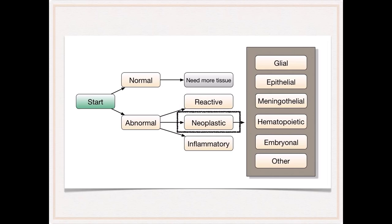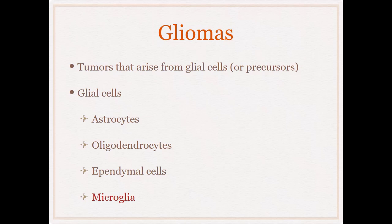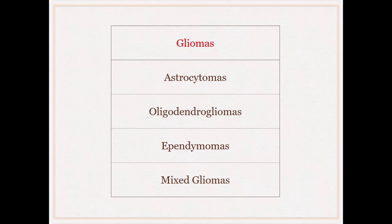The most common primary brain tumor is a glioma — tumors that derive from glial cells or their precursors. The main types of glial cells are astrocytes, oligodendrocytes, ependymal cells, and microglia. Microglia are macrophages and do not form common tumors. Most gliomas derive from astrocytes, oligodendrocytes, or ependymal cells, forming astrocytomas, oligodendrogliomas, and ependymomas. Mixed gliomas have fallen out of favor.